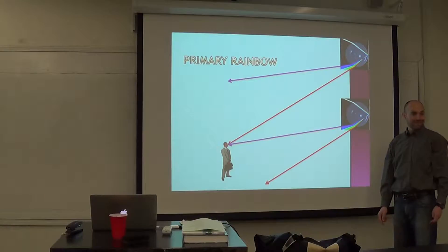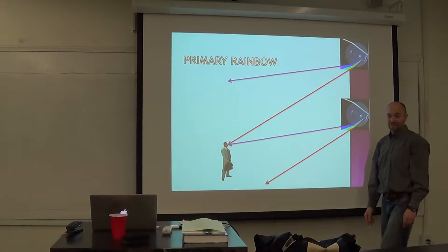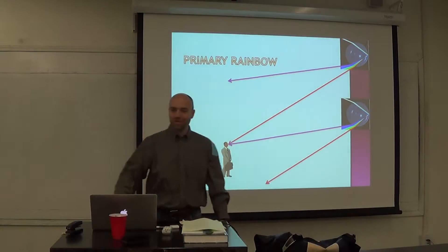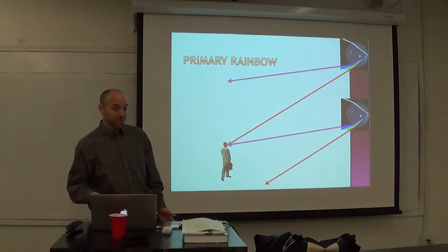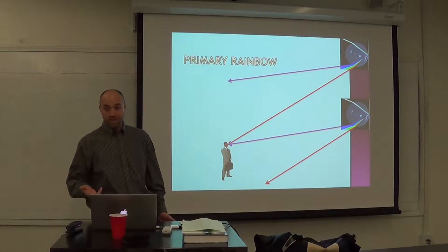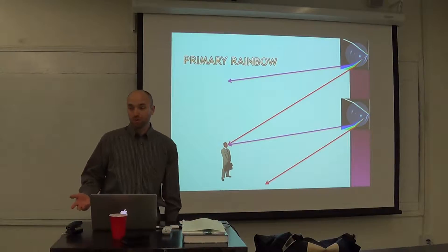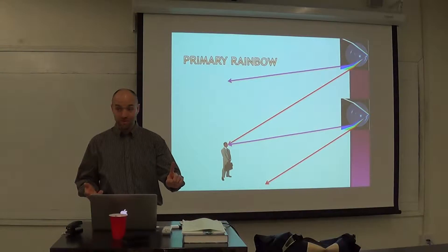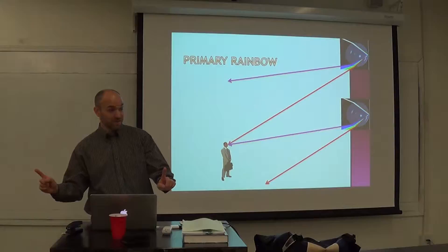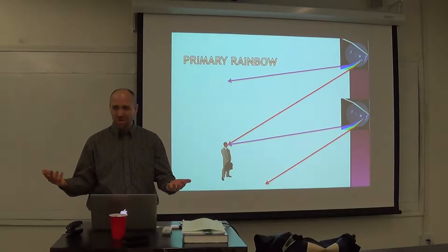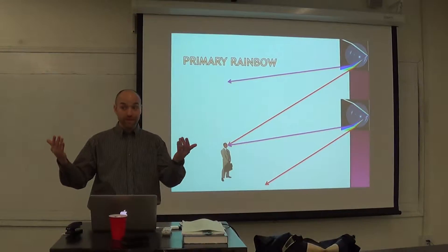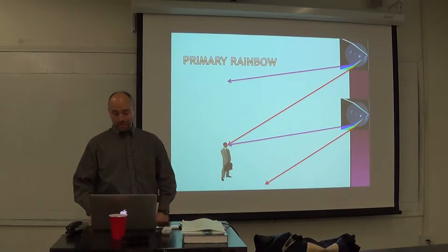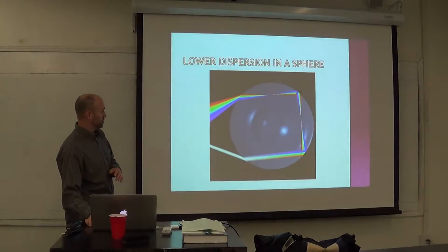This is why you see rainbows - the uppermost raindrop shows you red, and the lowermost shows you purple, so it's kind of flipped. This is called upper dispersion in a sphere - that's a primary rainbow. And 'upper' implies there must also be a lower. I'm glad you asked - so now we're going to talk about lower dispersion.